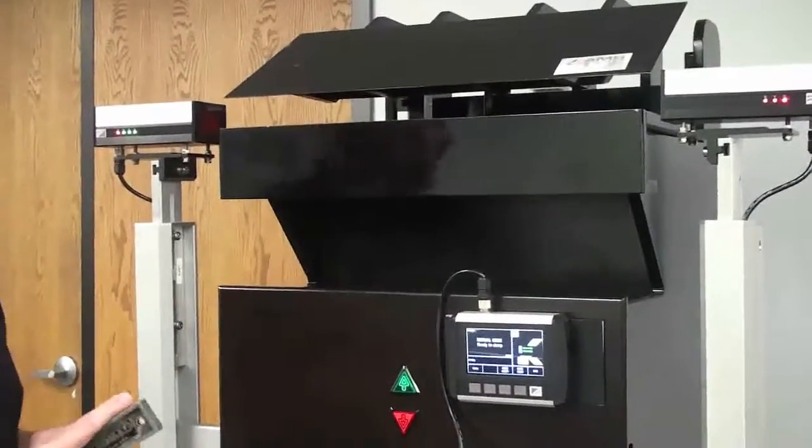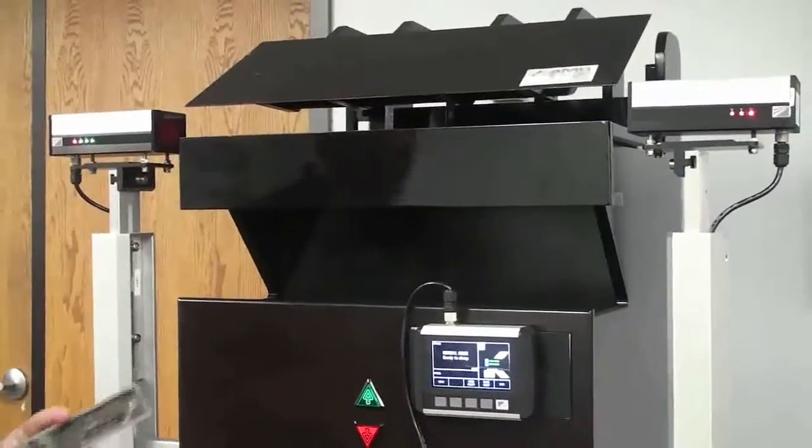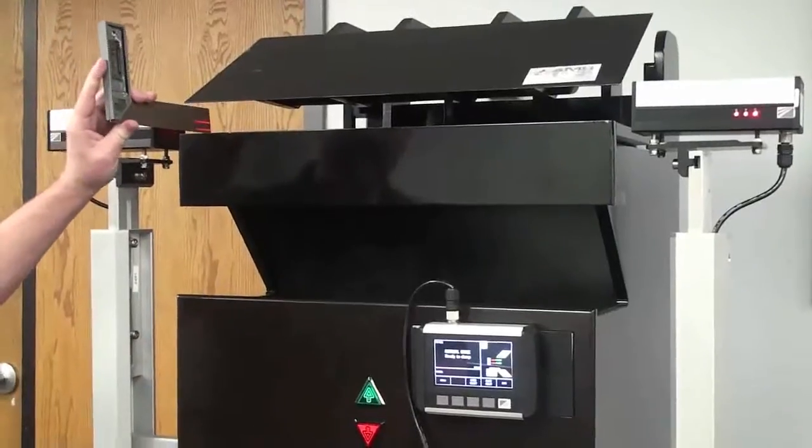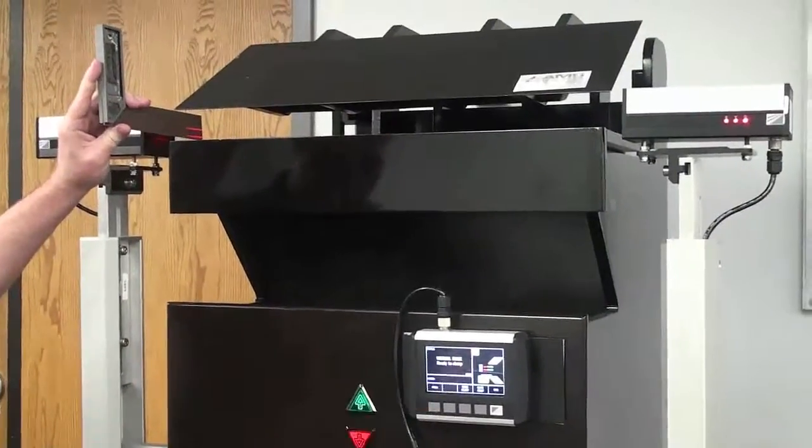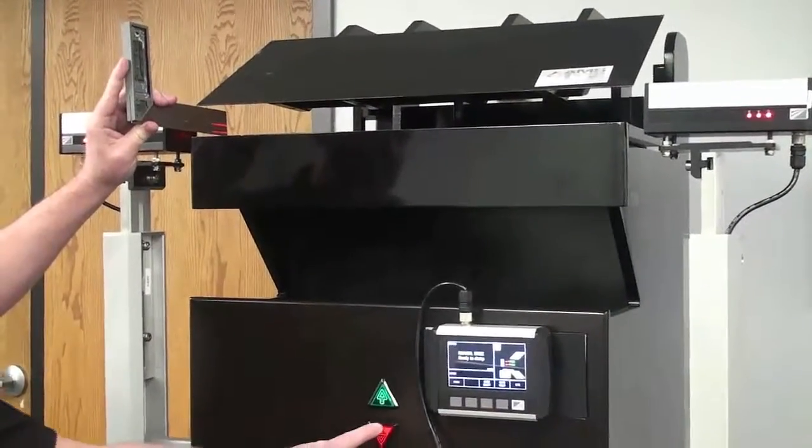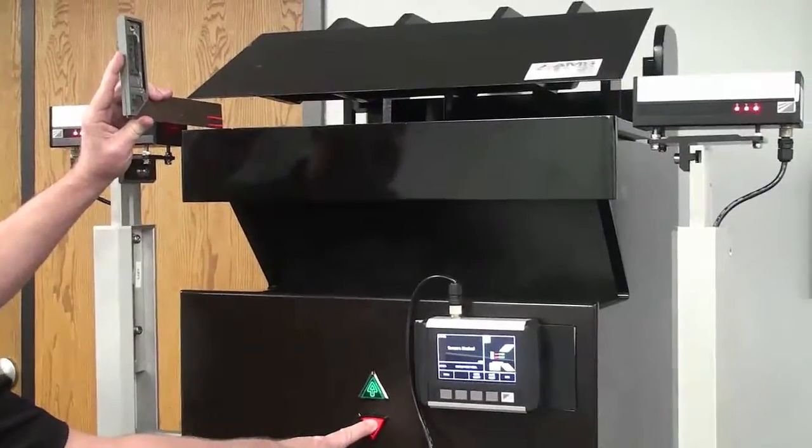So let's simulate an obstruction, an inadvertent obstruction. Say I have my hands up against the machine. I've blocked the front sensors again. If I go ahead and do this, it's going to tell me the sensors are blocked.